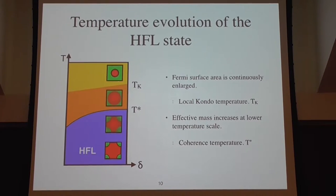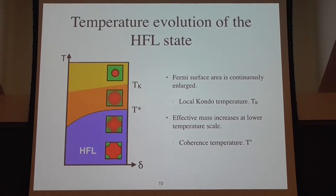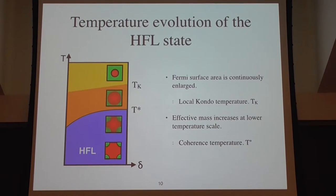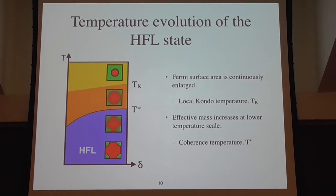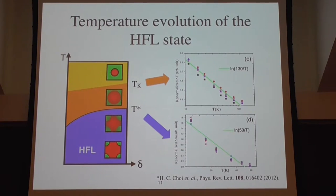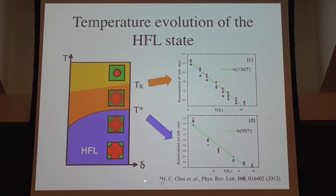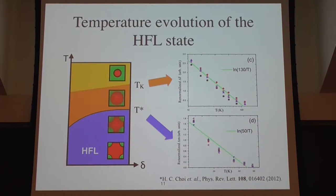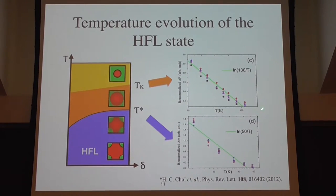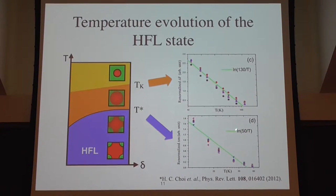We can say there exist two kinds of temperature scales. One is the so-called local Kondo temperature Tk, at which the Fermi surface area starts to increase continuously. The other, lower temperature scale is called the coherence temperature, at which the effective mass and coherency of the Fermi surface starts to increase. This result qualitatively agrees with the previous DFT+DMFT study for CeIrIn5. So you can see there exist two kinds of temperature scales for the Fermi surface area and the effective mass.